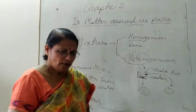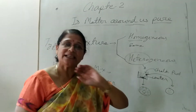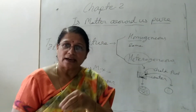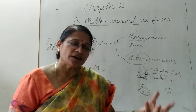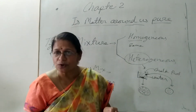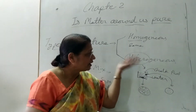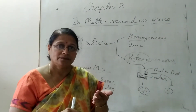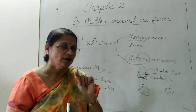Another example: take a traditional snack mixture (like chivda). If you take a quantity in one plate and count the peanuts, and take another portion and count again, you will get different numbers. Why? Because the ingredients are not uniformly distributed. This is a heterogeneous mixture — you can see the particles separately and they have a clear visible margin.